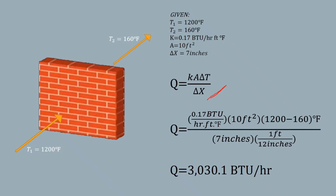So k is 0.17 BTU per hour feet Fahrenheit. Times the A, or the area, of 10 feet squared. Times the change in temperature, which is 1200°F minus 160°F.